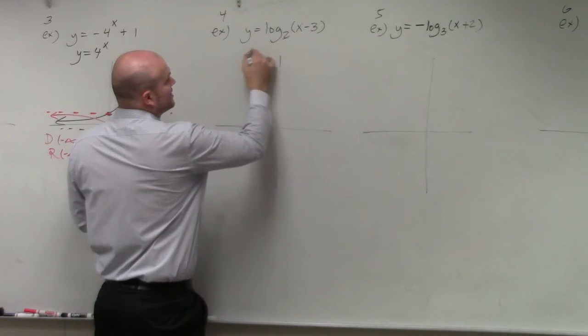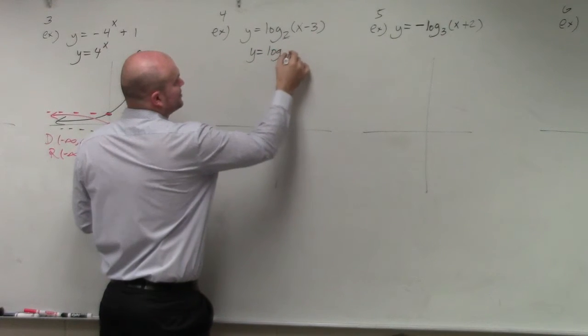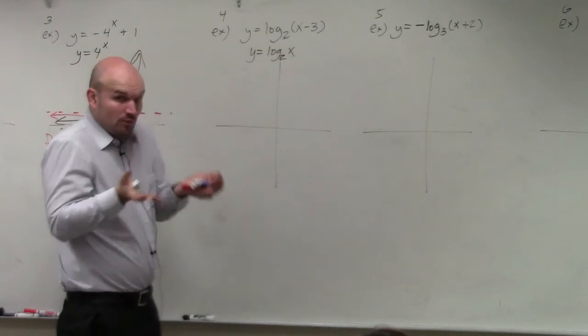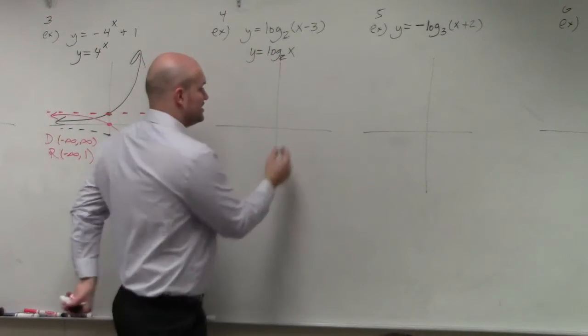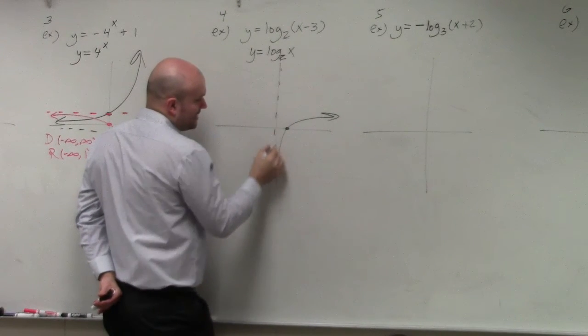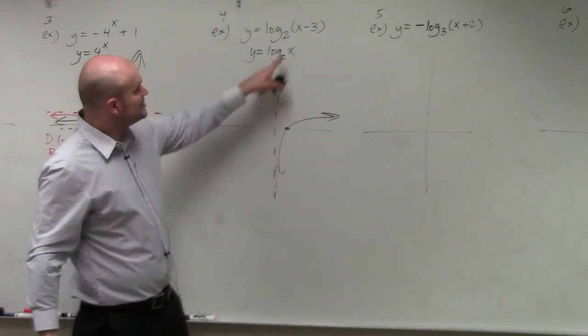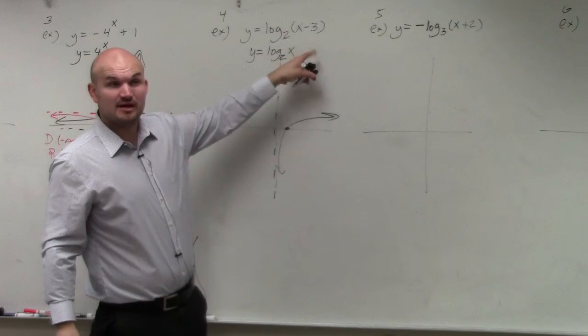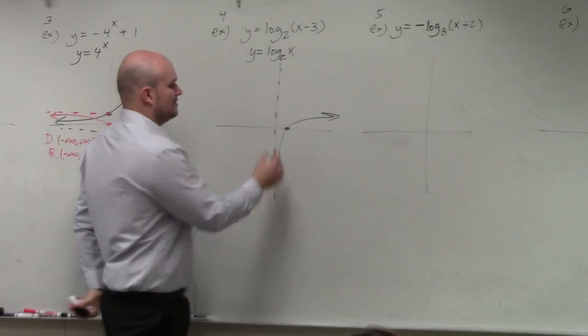If I was going to write this with no transformations, I would just have log base 2 of x, where we know that the one common point of my logarithmic function is 1 comma 0. Graph looks something like that. And remember, there's this vertical asymptote here. So if I shift this graph, x minus 3 is telling me to shift the graph 3 units to the right.